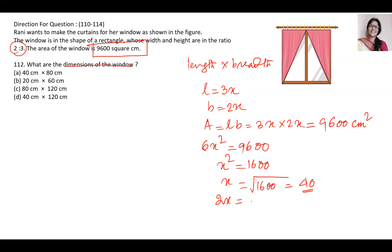Now 2x equals 40 times 2, that will be 80. And 3x equals 40 times 3, it will be 120. So breadth and length are given. So you will write first breadth into length. So breadth is 80, length is 120. So 80 centimeters multiplied by 120 centimeters. That means the dimensions are 80 centimeters by 120 centimeters, breadth by length.